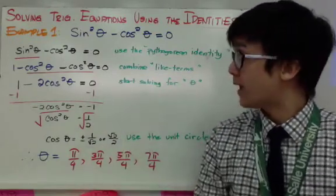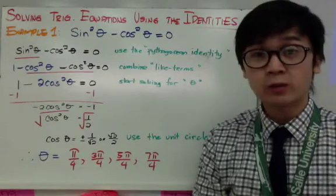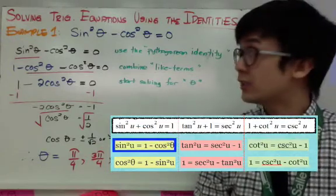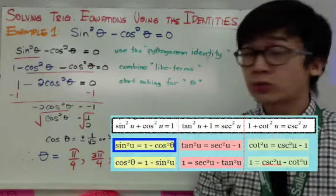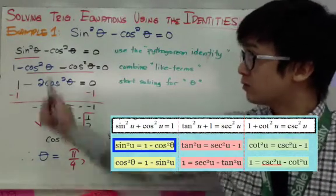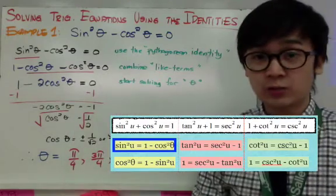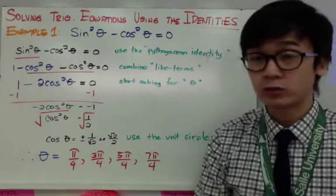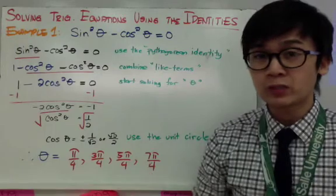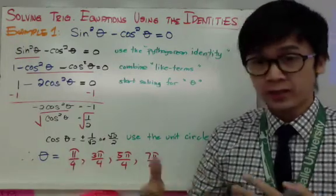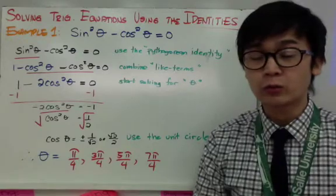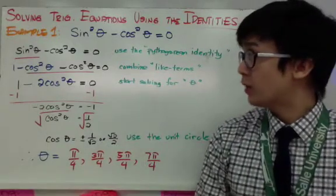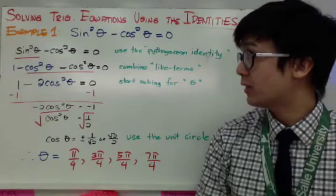For the first example, I have sine squared theta minus cosine squared theta equal to zero. This is an equation where I can use the Pythagorean identity on one of the terms. I chose to replace sine squared theta with the Pythagorean identity one minus cosine squared theta. You could also change cosine squared theta instead — there's no single way to answer trig equations. So now I have the new equation: one minus cosine squared theta minus cosine squared theta equal to zero.